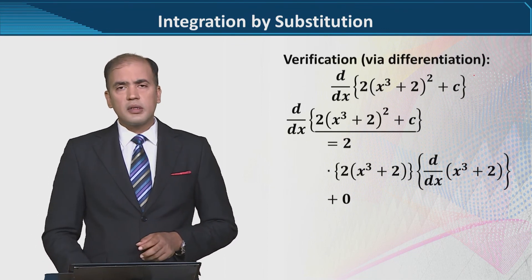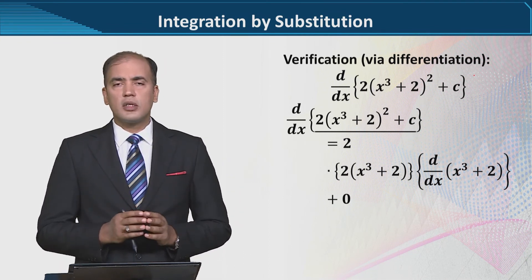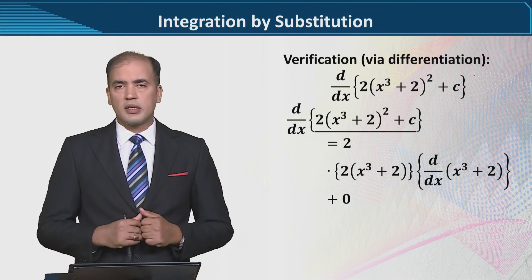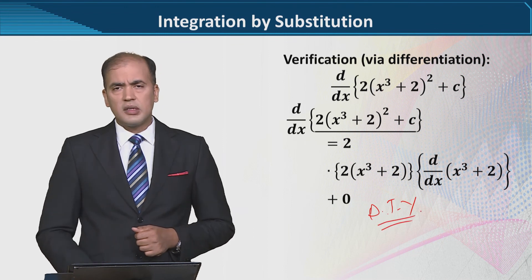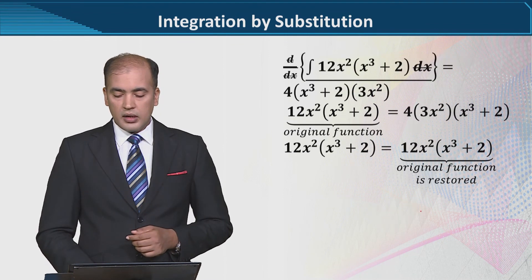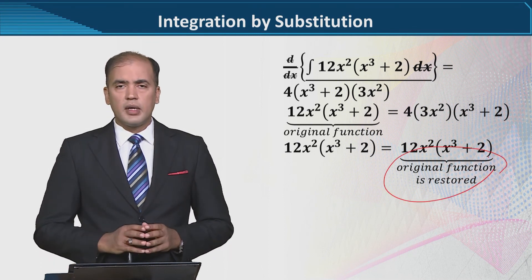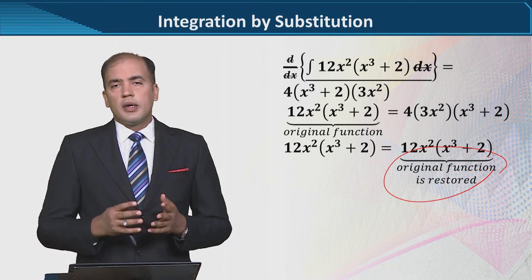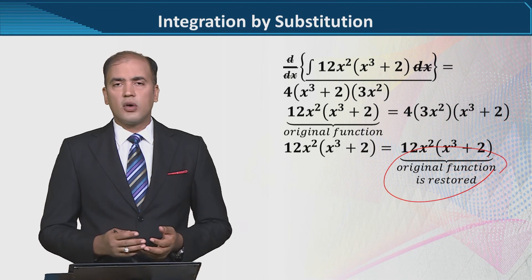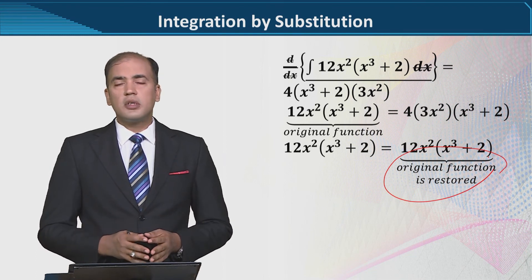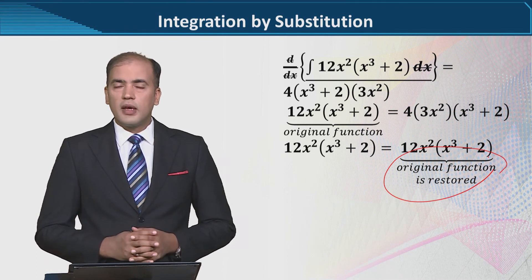You can also verify this. As you know, if the integral is given and we differentiate it, it should give back the original function. So I have left a small DIY for you — you can easily do it, all the steps are done. Pause the video and verify whether the original function is restored or not. So this is how functions that appear in the form of a product or in the form of a quotient can be integrated by using the integration by substitution rule. Thank you.